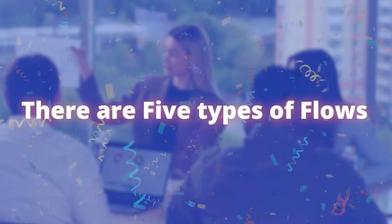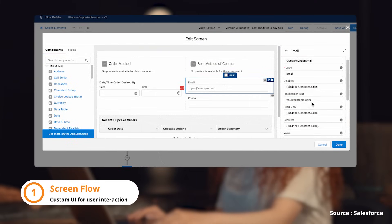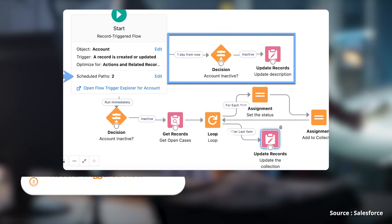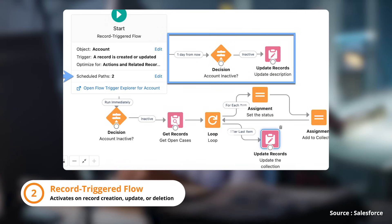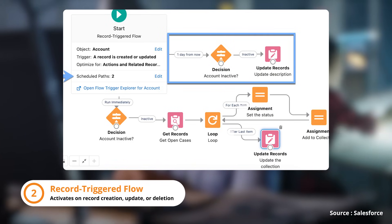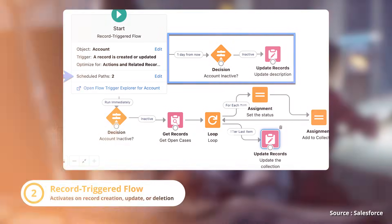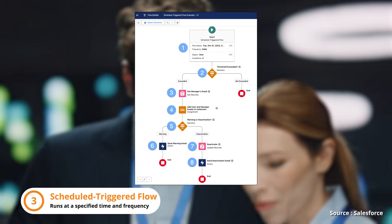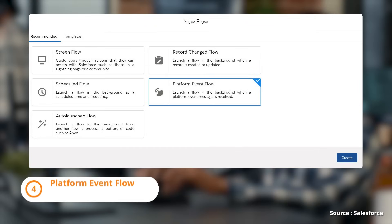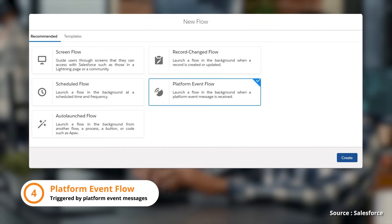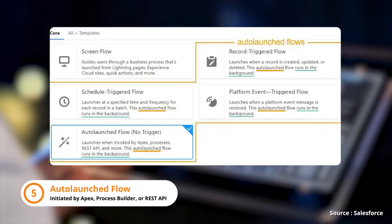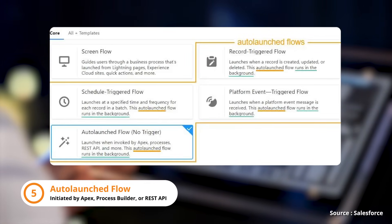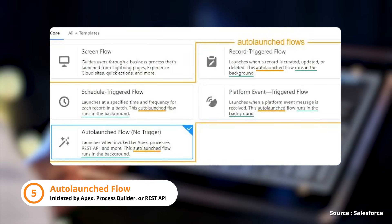There are five types of flows: 1. Screen Flow — custom UI for user interaction. 2. Record-Triggered Flow — activates on record creation, update, or deletion. 3. Scheduled-Triggered Flow — runs at a specified time and frequency. 4. Platform Event Flow — triggered by platform event messages. 5. Auto-launched Flow — initiated by Apex, Process Builder, or REST API.